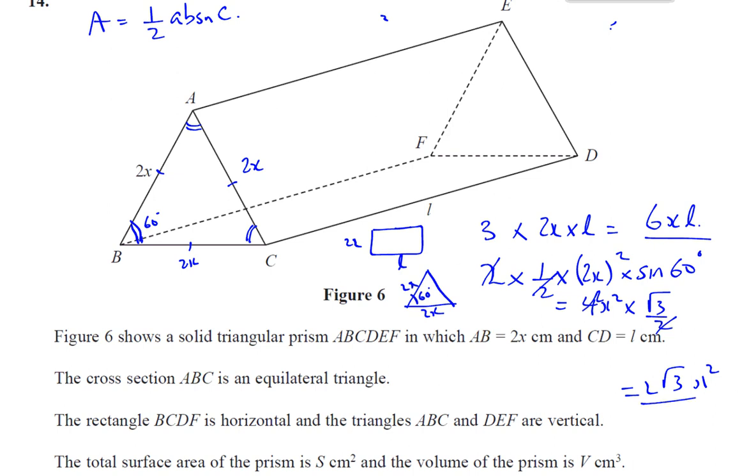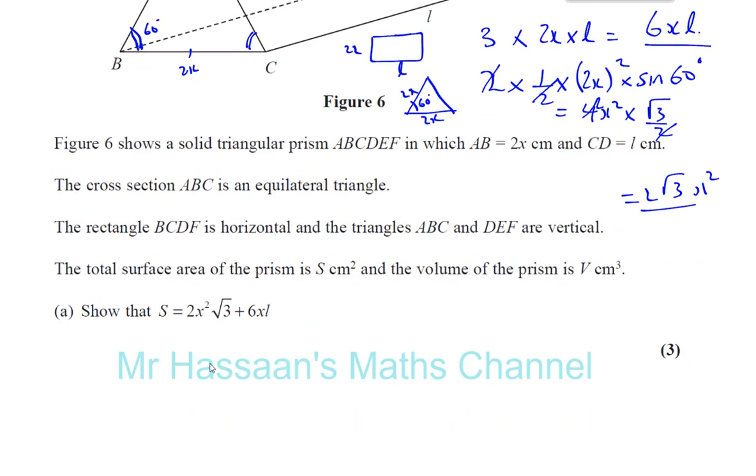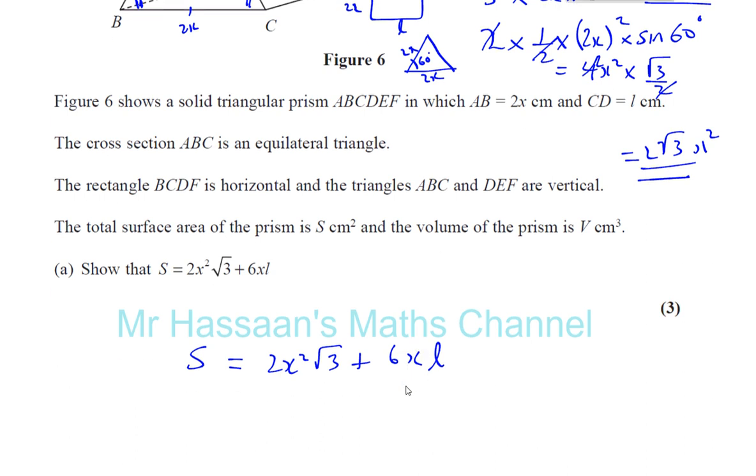Basically we have the area, that's the lateral surface area, the area of the rectangles on the side, and this is the area of the two triangles, so we can say that the surface area S is equal to, as you can see we've written in this form, 2 times x squared root 3. It's better to write it there so that x squared is distinct from the square root sign, plus 6xl. That's what we've got here, that is the surface area.